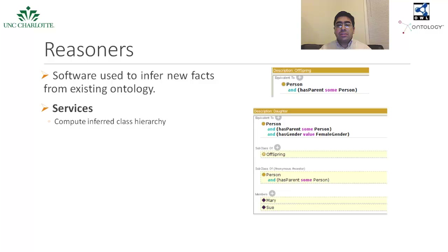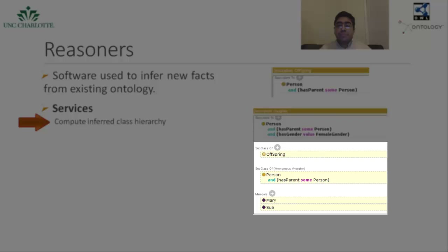One of the key features of ontologies described using OWL DL is that they can be processed by a reasoner. A reasoner is software used to derive new facts from existing ontologies. Ontology reasoning reduces the redundancy of information in the knowledge base and helps in finding conflicts in the contents. One of the main services offered by a reasoner is to test whether a class is a subclass of another one. By performing such tests, it is possible for a reasoner to compute the inferred ontology class hierarchy, as highlighted in the figure.